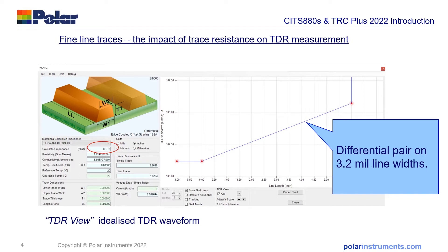Included in the TRC track resistance calculator is now a TDR view, which gives you a stylized idealized view of a TDR trace on a coupon. It shows you how the measured impedance will be influenced by the distributed resistance along the trace. Here I've shown a differential pair on 3.2 mm line widths, and the illustration shows how that distributed resistance from the copper trace will actually cause the apparent impedance to lift over the length of the trace.